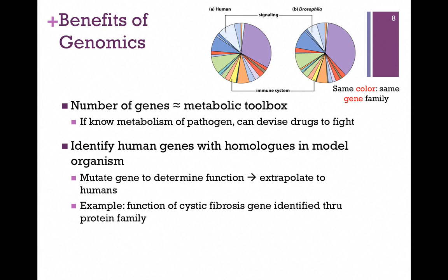Another example would be to institute a genome comparison between different species. For instance, we have a circular genome map of the human genome on the upper left, and on the right, Drosophila melanogaster, the fruit fly, and the identical genes — those in the same gene family shown in the same color — and you can see by this comparison that they share many of the same genes.